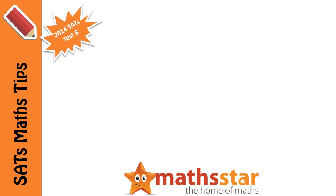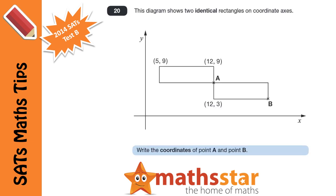This question comes from the 2014 SATs Maths Test B. It shows a diagram with two identical rectangles on a coordinate grid, and asks us to find the coordinates of points A and B.